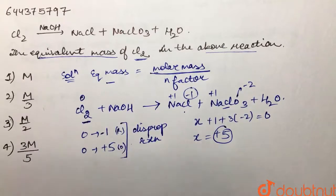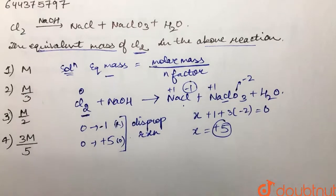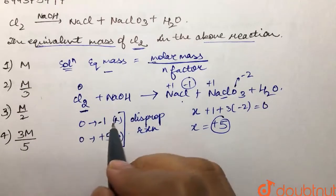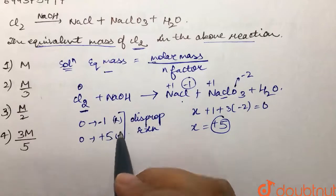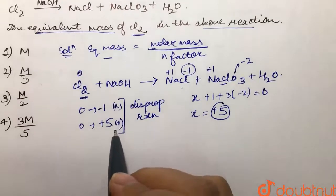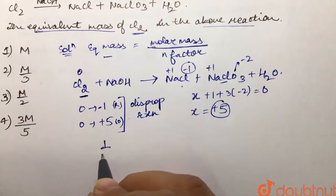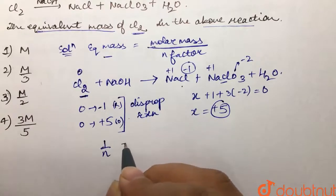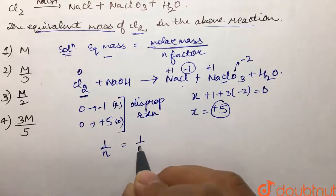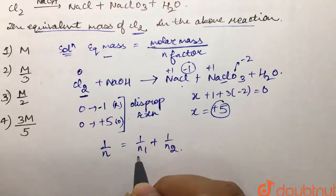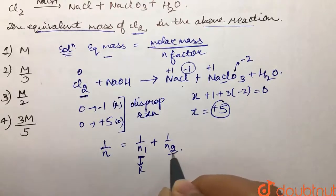We find the change in oxidation number in both cases — that is, the change in number of electrons. For a disproportionation reaction, the n factor is given by: 1/n = 1/n₁ + 1/n₂, where n₁ is for reduction and n₂ is for oxidation.